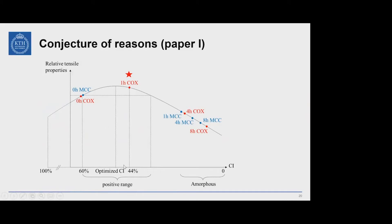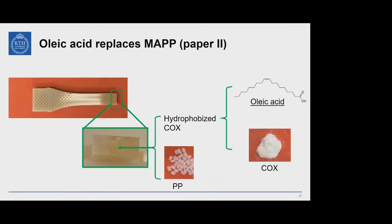The exact optimized crystallinity index and the milling time to achieve it remain unknown and need further study. In the next project, we also prepared composites with PP and hydrophobized COX, but this time we decided to replace MAPP with oleic acid. There are several reasons: structurally, oleic acid has a hydroxyl group that can react with COX and a long fatty chain compatible with PP, and it is a renewable and biodegradable material.